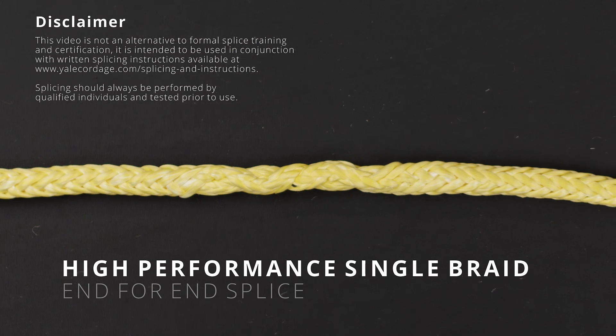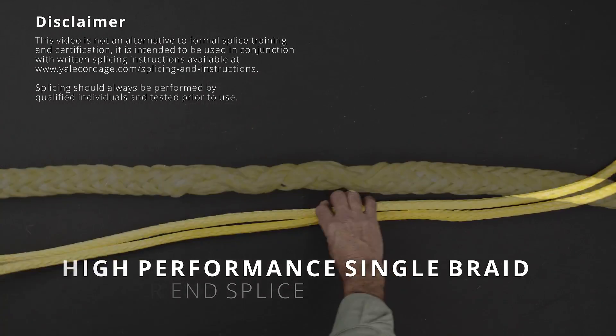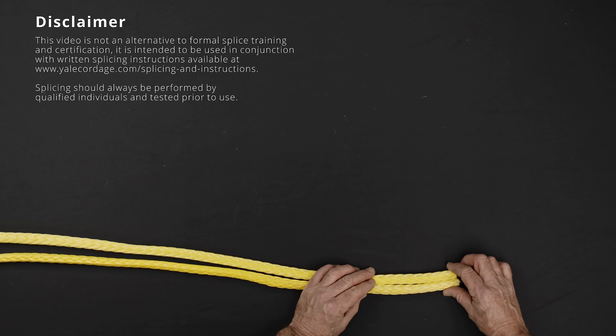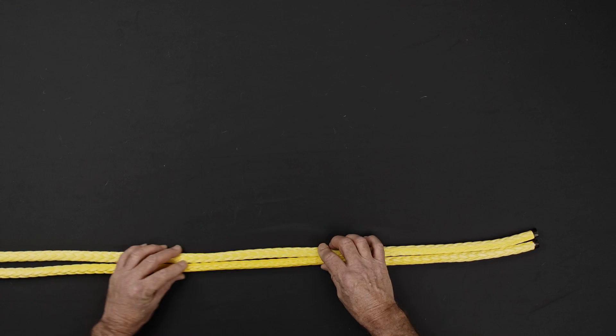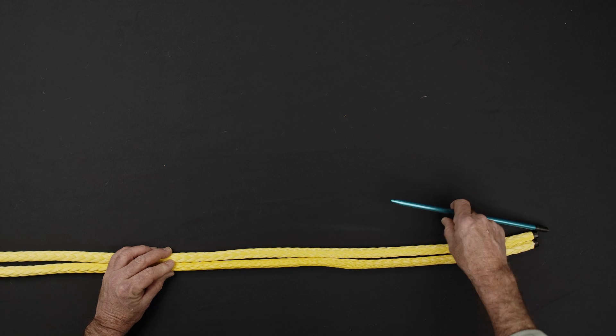This video covers the end for end splice procedure for Yale Cordage High Performance Single Braids. Begin by laying out the two ends of your rope to be spliced.